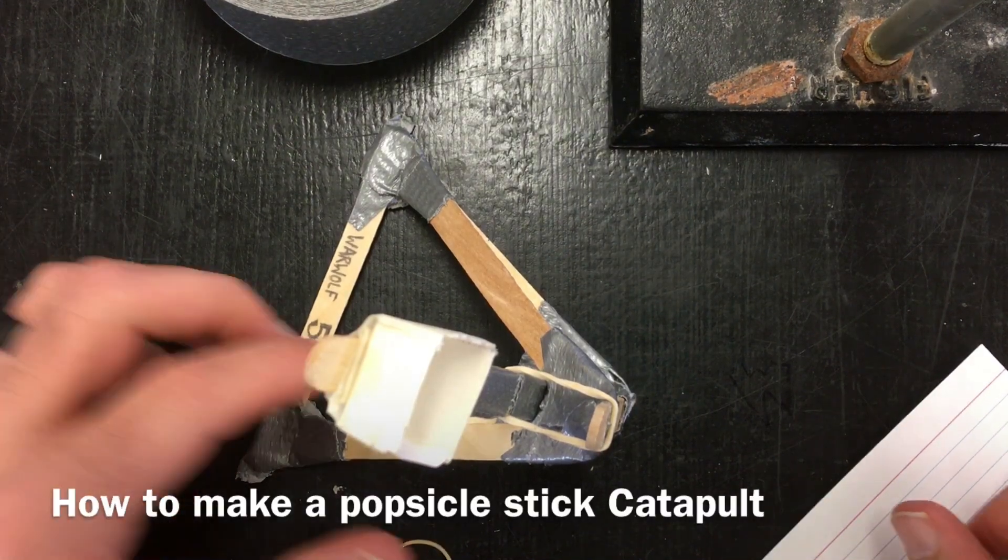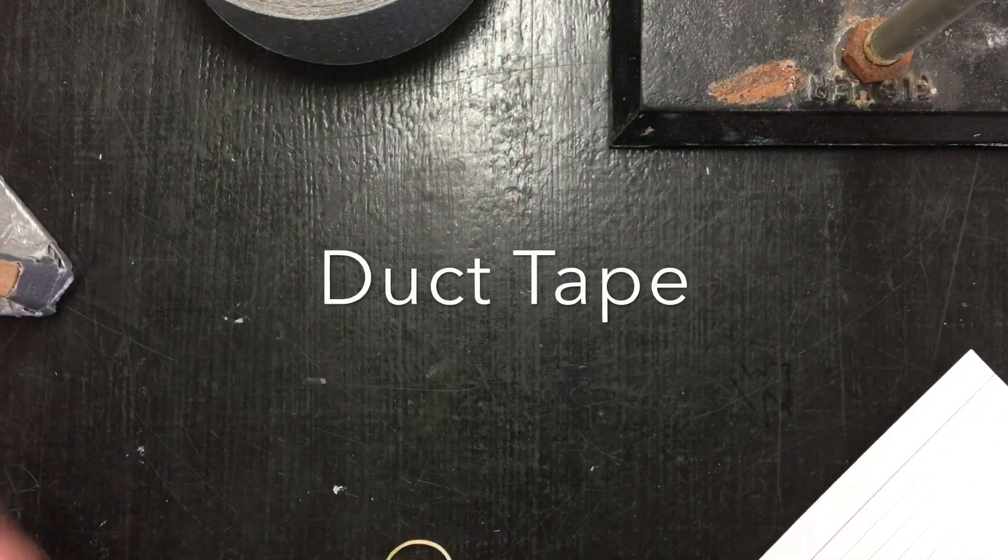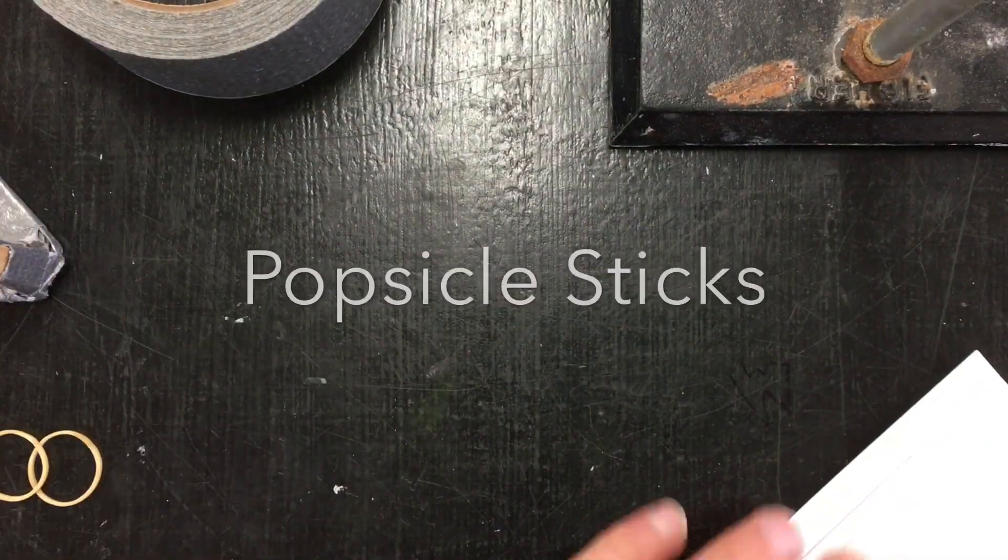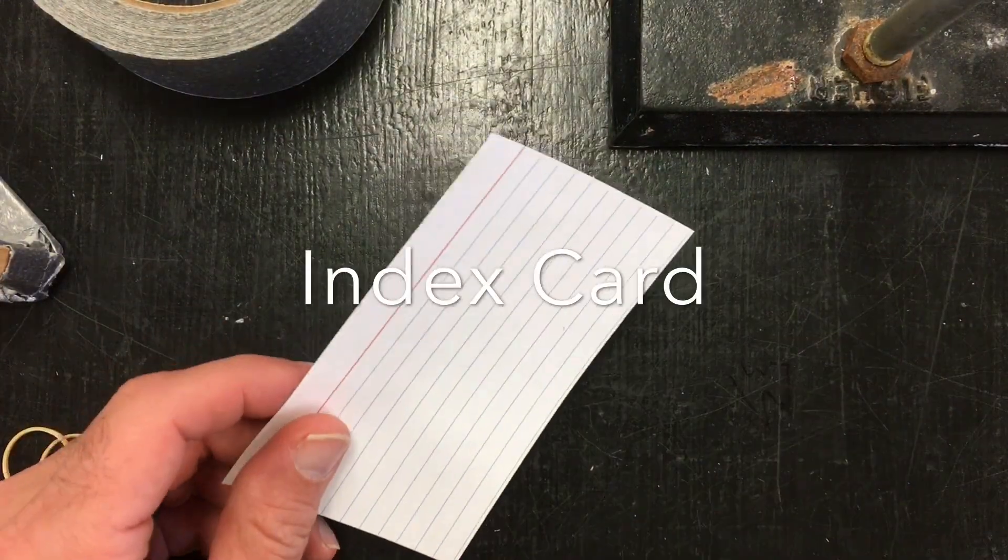Hey everyone, today I'm going to show you how to make a popsicle stick catapult. What you're going to need for this project is some duct tape, some rubber bands, some popsicle sticks, index card, or some cardstock paper.